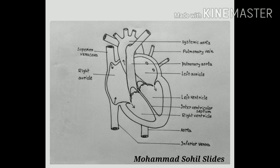The left ventricle has a wall thickness of about 10–15 mm. It forms the apex of the heart and is cone-shaped, like the right ventricle. Blood passes from the left ventricle through the aortic valve; some blood flows into the coronary arteries and the remaining blood passes through the aorta to supply the rest of the body.